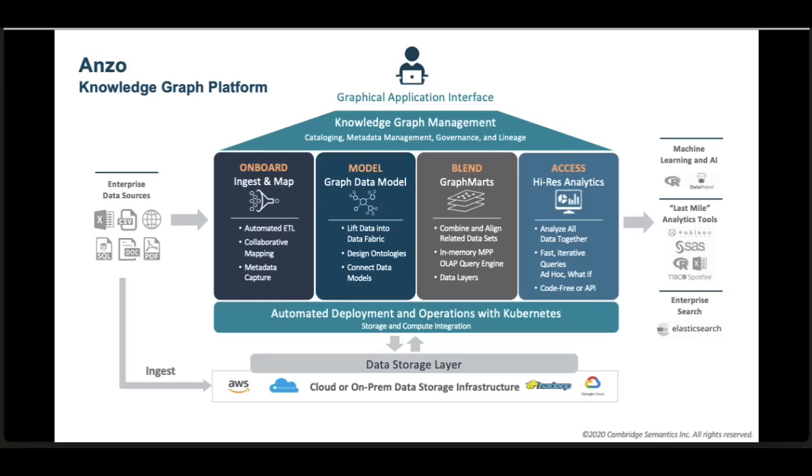Onboarding is the ability to point and click and automatically ingest data from over 200 different source types, to automatically catalog that data, create an ontology, and then gives you the ability to automatically connect these different data sources together and blend those in different ways for different use cases and create what we call graph marts for different analytical use cases.